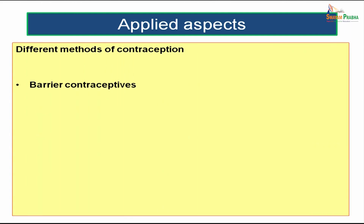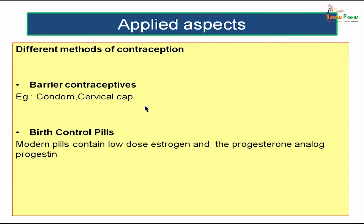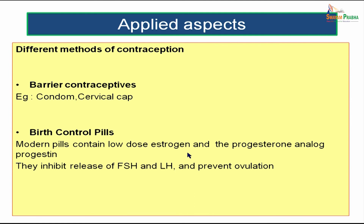There are also methods of contraception — methods we use in order to prevent fertilization. There are many barrier contraceptives, used to prevent the sperm from entering into the uterine cavity and fertilizing with the oocyte, done with the help of a condom or cervical cap. We also have birth control pills; modern pills actually contain low dose estrogen and progesterone. These hormones inhibit the release of FSH and LH and ultimately result in the prevention of ovulation.